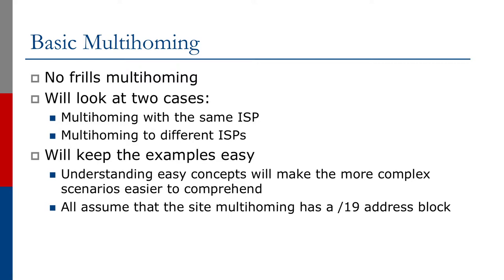For all these examples, we're going to assume that the site multi-homing has an IPv4 address block which is a slash 19 in size. These examples will work for all sizes of IPv4 and/or IPv6 address space, but we're going to work through all these examples using just IPv4 and the assumption that the site that's multi-homing has a slash 19.